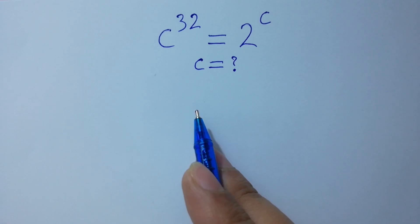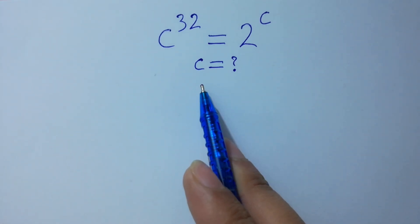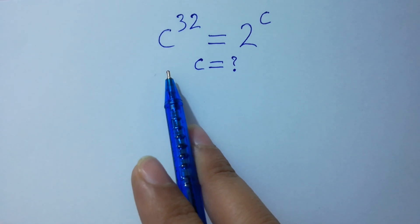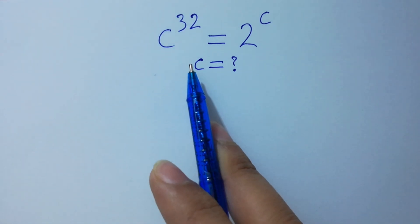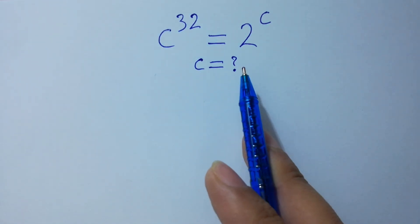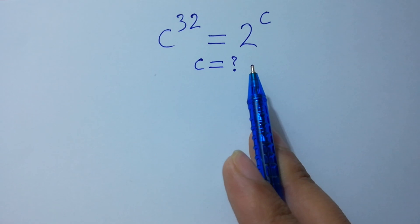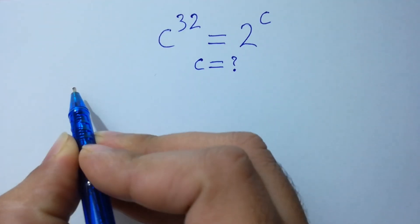Hello friends. Find the value of C if C to the power 32 equals 2 to the power C. Let's have a solution.